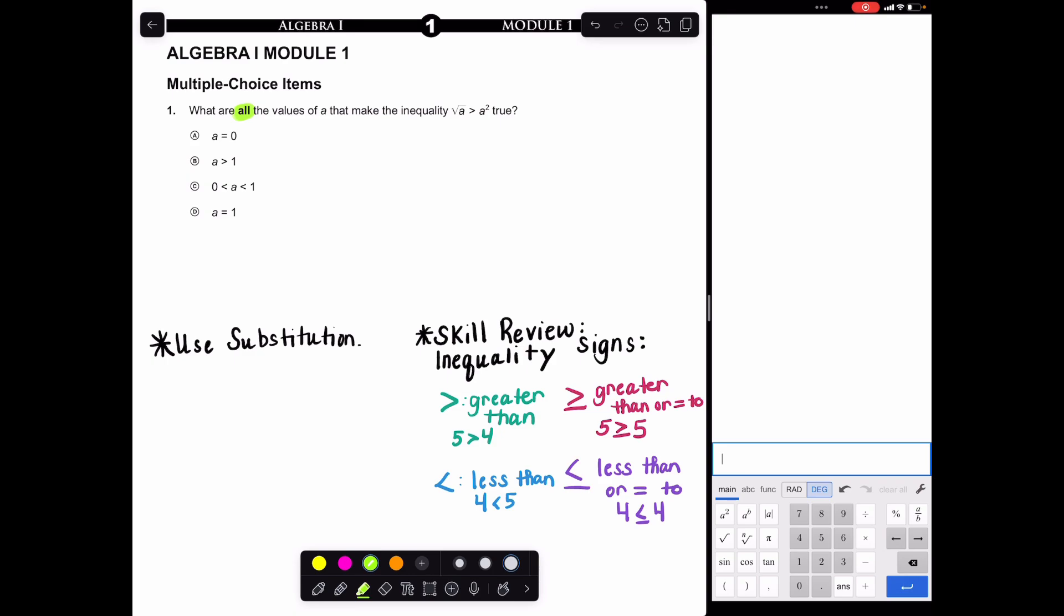First, let's review inequality signs. Greater than is different than greater than or equal to. I couldn't say five is greater than five because they're equal. If I had five is greater than five, that's not a true statement - it's not bigger than five, it's exactly equal. You would need that line underneath for greater than or equal to. This will come up when we plug values in.